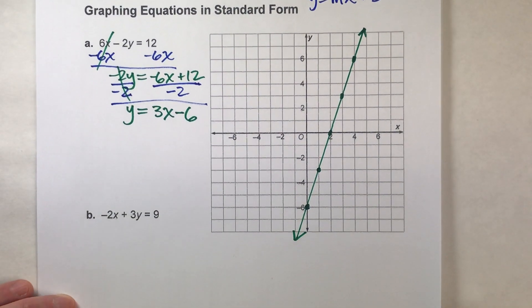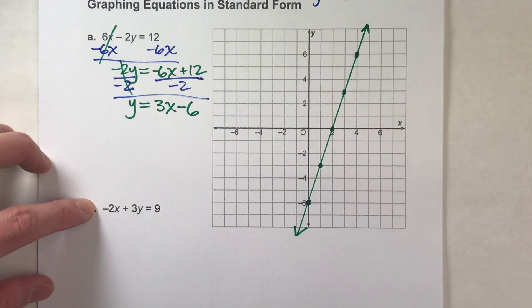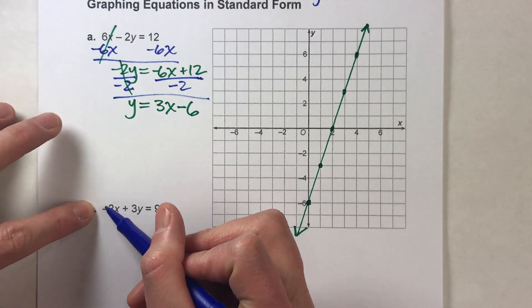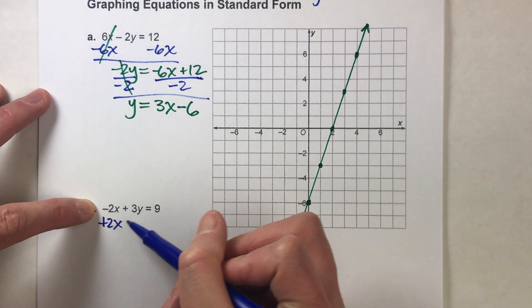Let's do the second example now though. Okay, so we've got negative 2x plus 3y equals 9. Again, we want to get y by itself, so I'm going to undo the negative 2x by adding 2x to both sides.